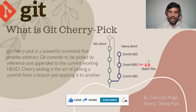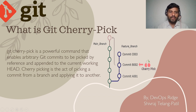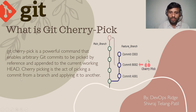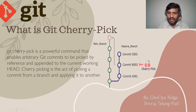What is git cherry pick? As per this diagram, git cherry pick is a powerful command that enables arbitrary git commits to be picked by reference and appended to the current working head. Cherry picking is the act of picking a commit from a branch and applying it to another. From this feature branch, it's like committing only one commit directly to the main branch.